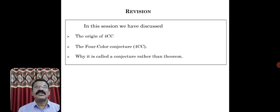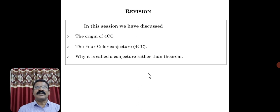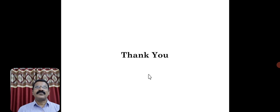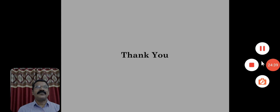In this session, we have considered the Four-Color Conjecture — how it came into existence, the origin of the Four-Color Conjecture, that every planar graph is four-colorable, and why it is called a conjecture rather than a theorem. These are the reference books for this topic. With this, we conclude this session. Thank you.